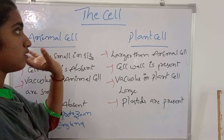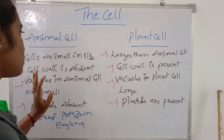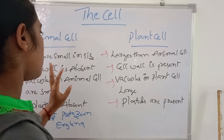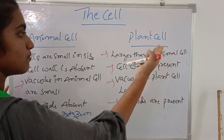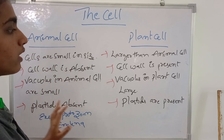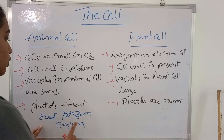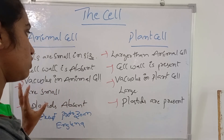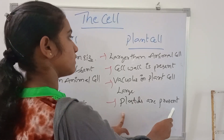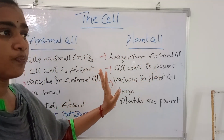Here is the difference between animal cells and plant cells. In animal cells, cells are small in size; cell wall is absent in animal cells, but cell wall is present in plant cells. Vacuoles are small in animal cells, but large in plant cells. Plastids are present in plant cells. Chloroplast, responsible for photosynthesis activity, is present in plant cells and absent in animal cells.